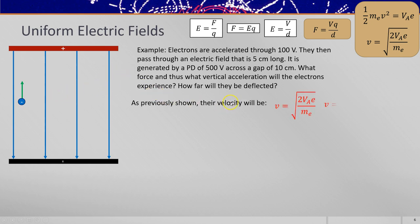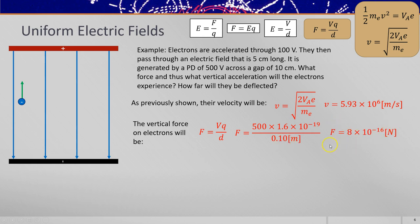So as previously shown, you can work out their velocity using this equation. The vertical force on the electrons is given by VQ over D. So that's 500 volts for the voltage across the plates times by the charge on the electron divided by the separation of the plates gives you the force. Now you know the force, you can work out the acceleration because we know the electron's mass. So force over mass, you'd have to look up the electron's mass, gives you 10 to the 14 meters per second squared of acceleration.